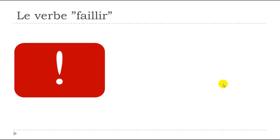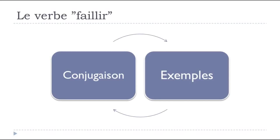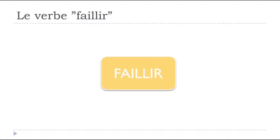The important thing to keep in mind is that faillir is mostly used at the passé composé form. On l'utilise principalement au passé composé. But as we want to cover this verb fully, we'll see la conjugaison and then the present form as well, because there is a good reason for that.